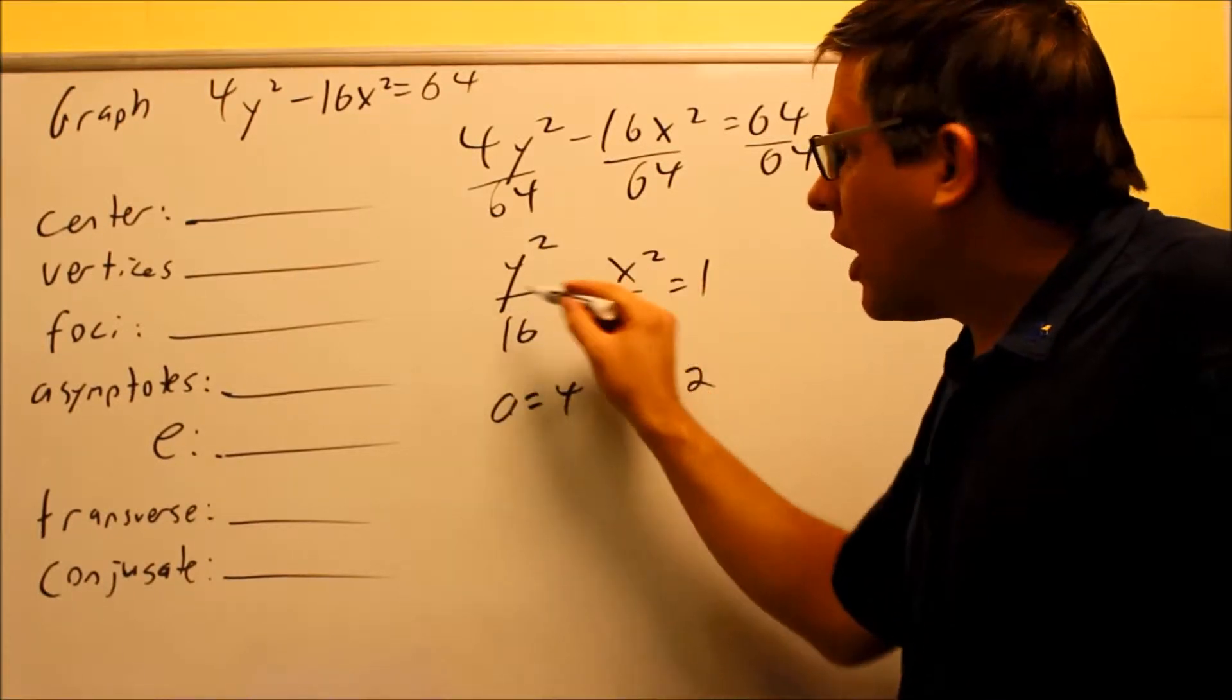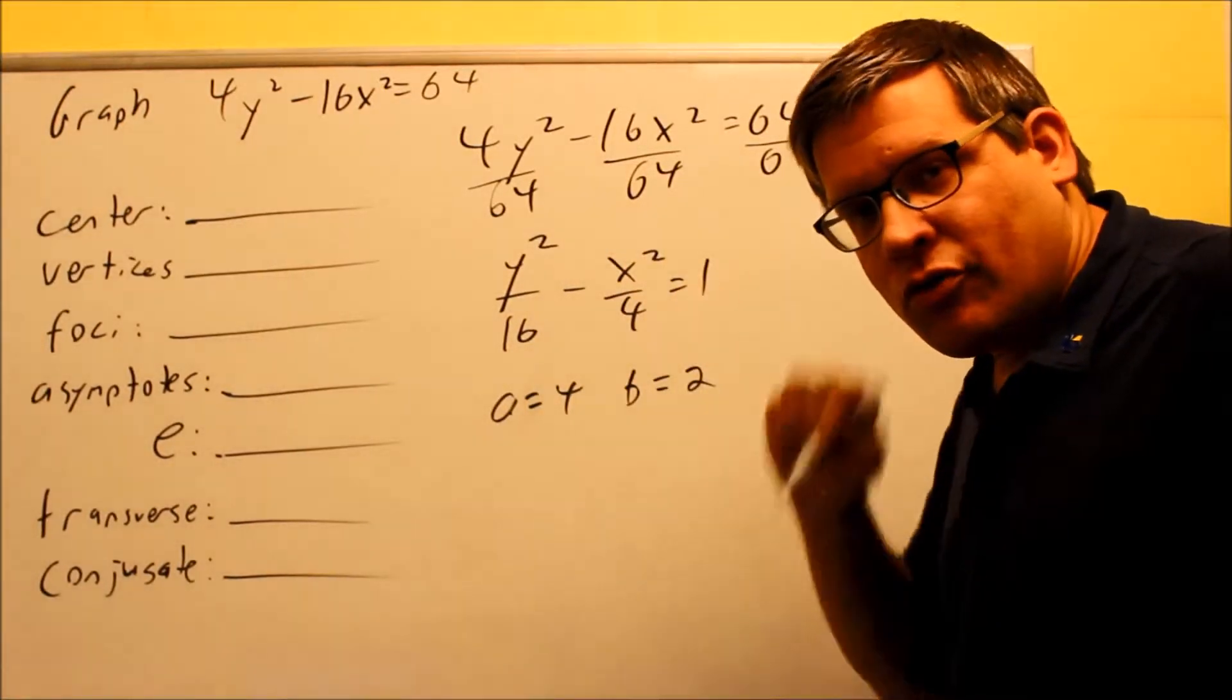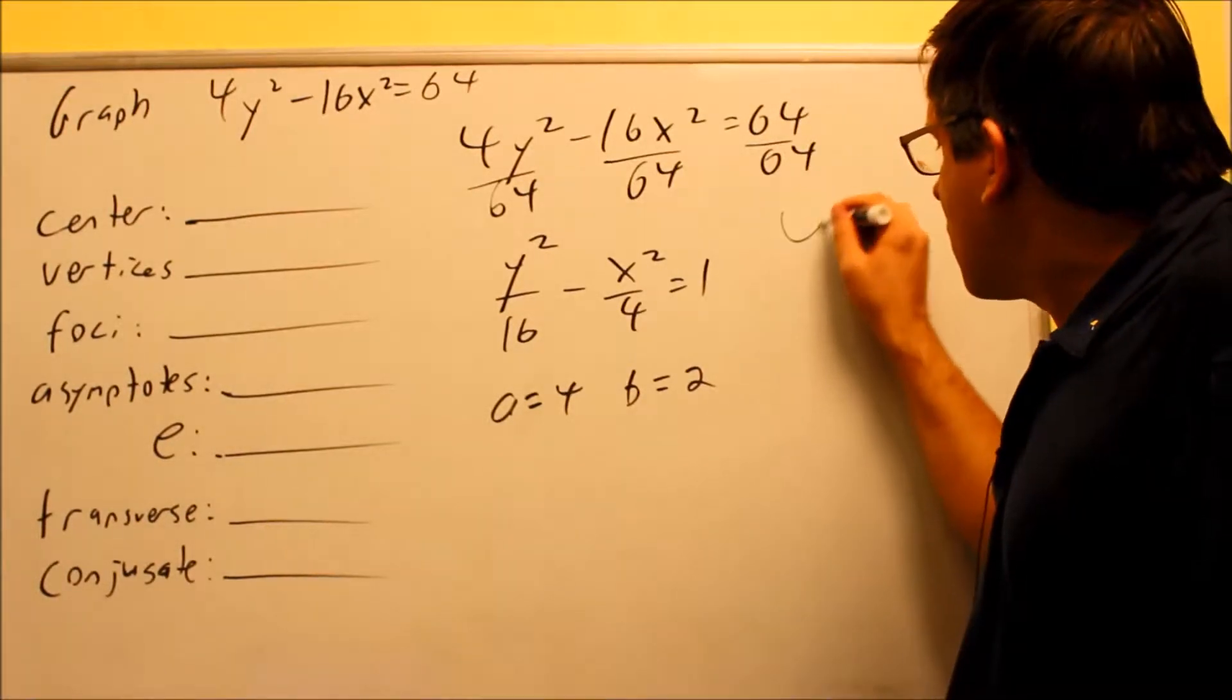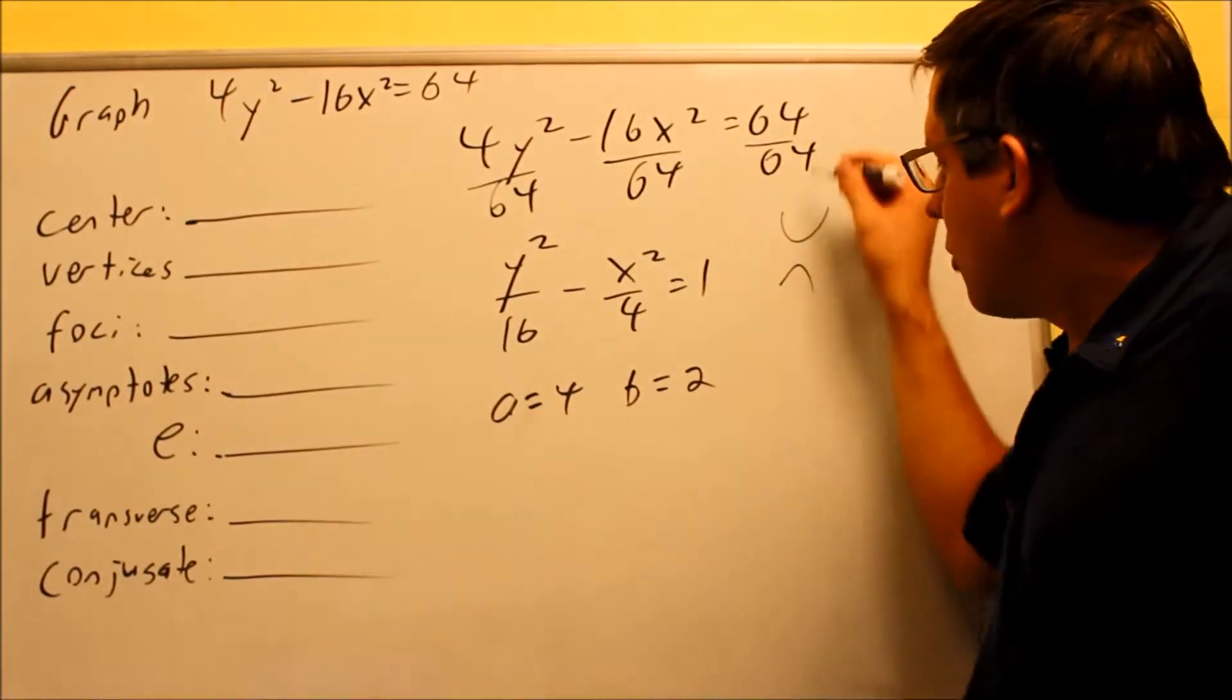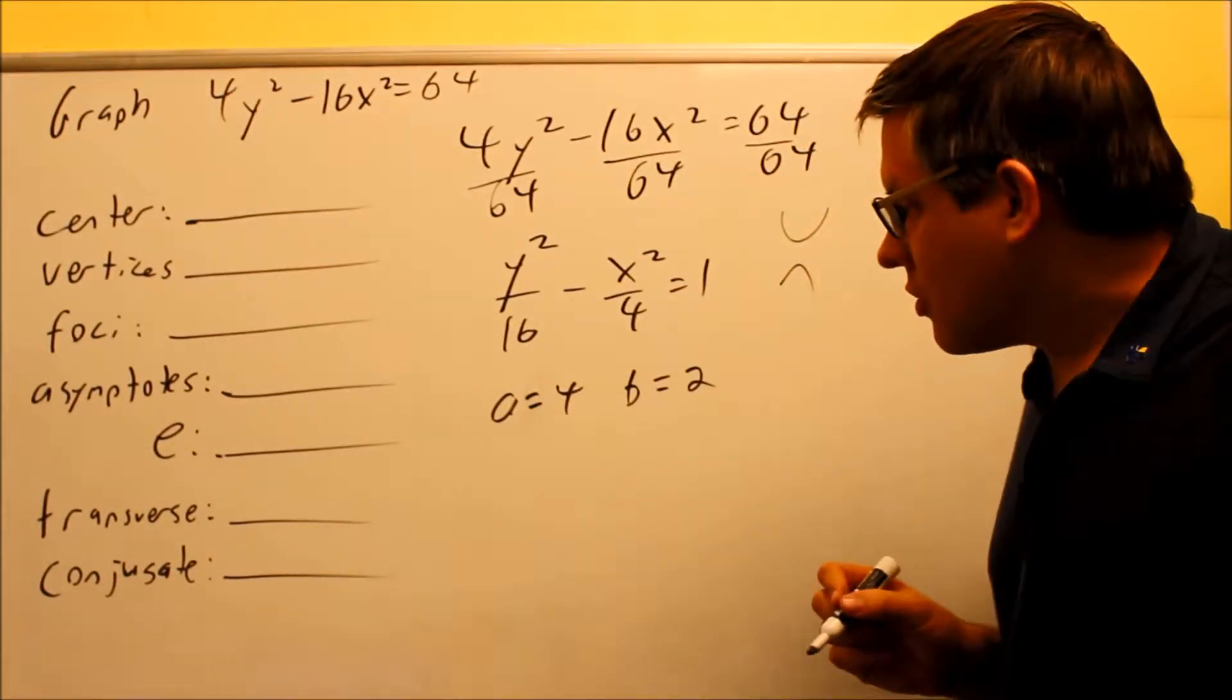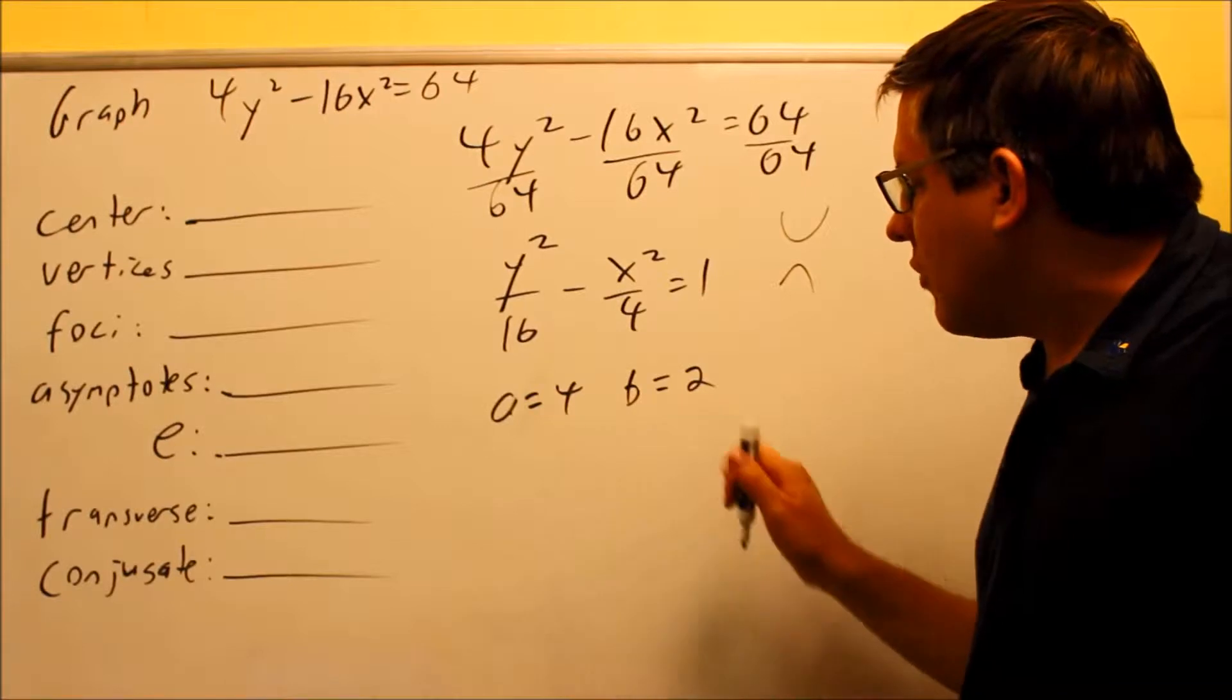The fact that the y squared comes first, when we're talking about the models we had in the beginning of this section, this tells us it's going to be opening up and down. So the hyperbola opens up and down because we have a y squared here that comes first. So here's our a and b values.